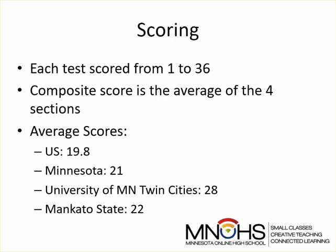The ACT is scored on a scale from 1 to 36. Typically, you'll hear people refer to their composite score. The composite is the average of the four sections. The average composite score in the United States is 19.8. In Minnesota, the average composite is 21.